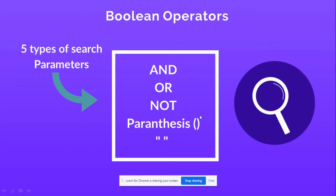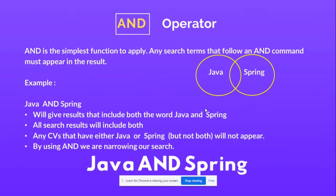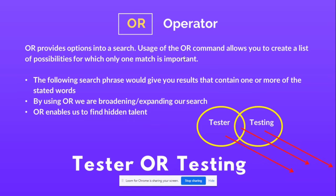By applying these Boolean operators appropriately, we can get relevant profiles and save a lot of time in filtering results. The first operator is AND. When we use AND between two keywords — for example, Java AND Spring — we get results which include both keywords. We will not get resumes that have only Java or only Spring. Using AND narrows down our search; the more times we use AND, the fewer profiles we will get.